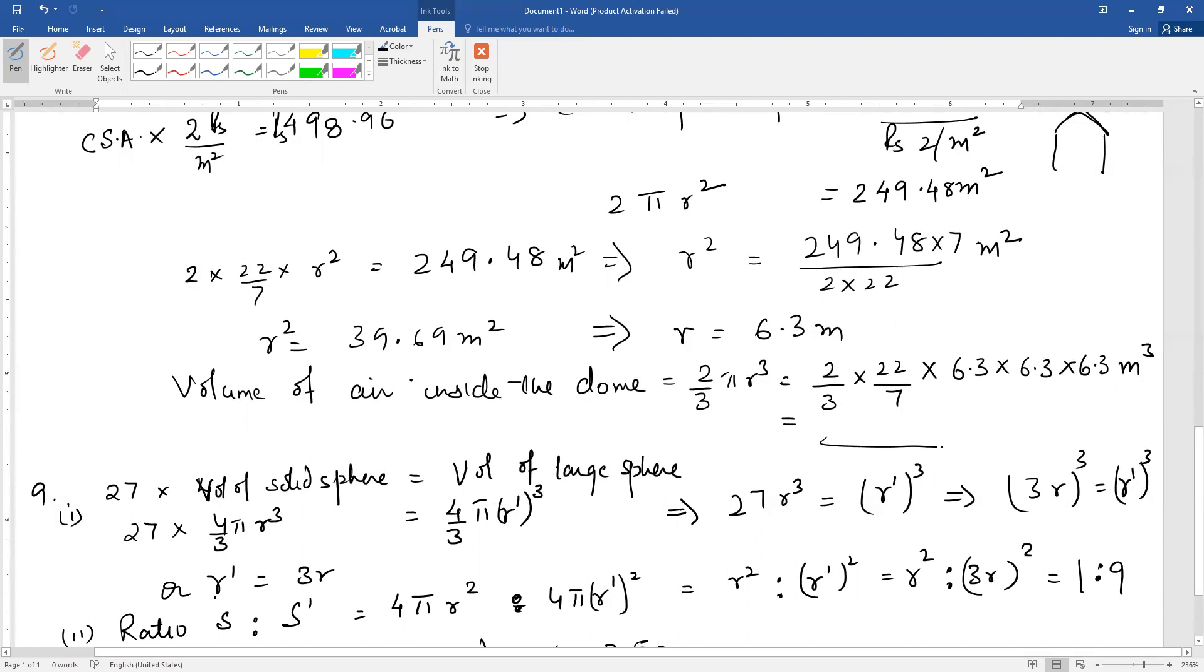Sometimes this question is asked in short form just till radius. But here you have the second part. Find the ratio s and s'. s was the small sphere's surface area and s' of the new one. Since surface area is 4π r²...